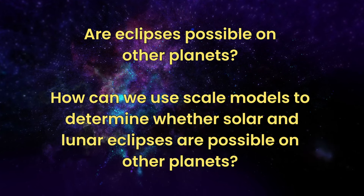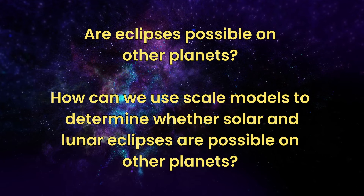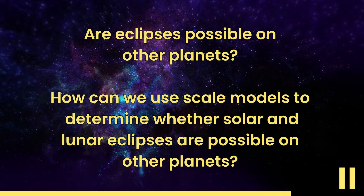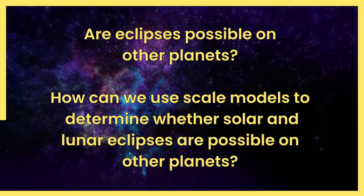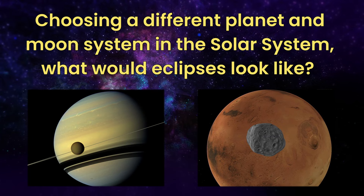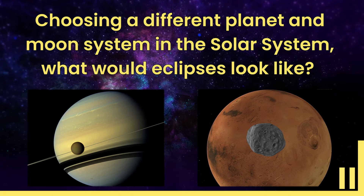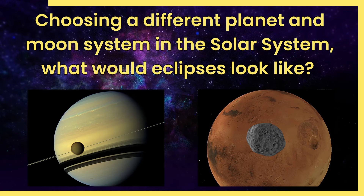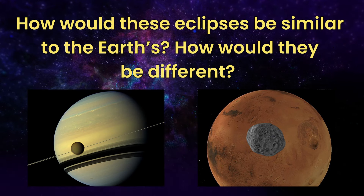Now it's your turn. Choose your own planet-moon system, gather all the information you need to make a scale model of it, and consider these big questions: Are eclipses possible on other planets? How can we use scale models to determine whether solar and lunar eclipses are possible on other planets? Choosing a different planet and moon system in the solar system, what would eclipses look like? How would these eclipses be similar to Earth's, and how would they be different? Thank you.